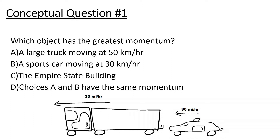Let's look at this first question: Which object has the greatest momentum? A) a large truck moving at 50 kilometers per hour, B) a sports car moving at 50 kilometers per hour, C) the Empire State Building, or D) choices A and B have the same amount of momentum.